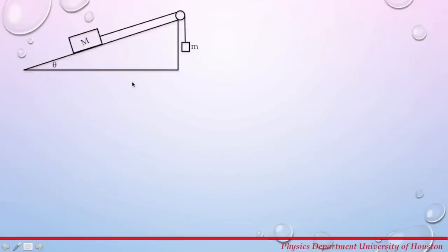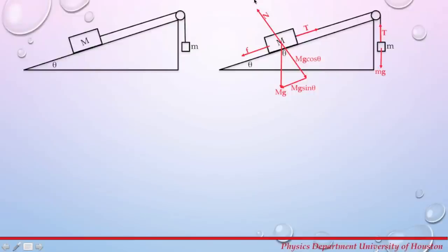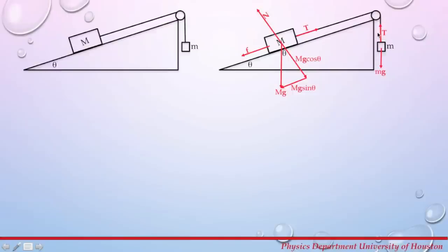The first step is to draw a free body diagram, which is a diagram that contains all the forces acting on your system. Let's start by analyzing all the forces acting on the falling mass. You have a gravitational force acting downward and a tension force acting upward. When the system starts moving, the acceleration of the falling mass and the large mass M are the same because they are connected by a thread.